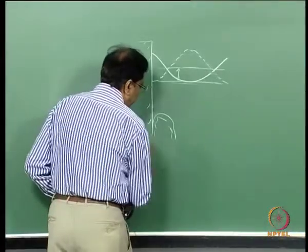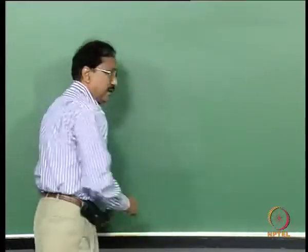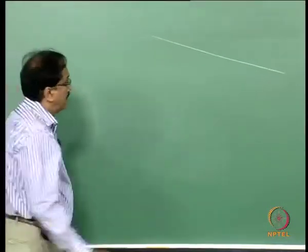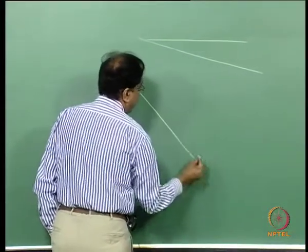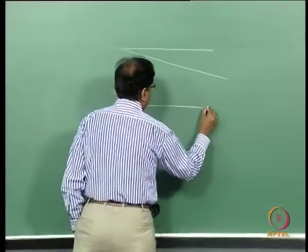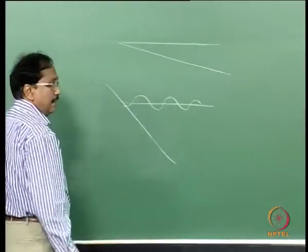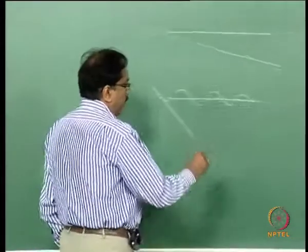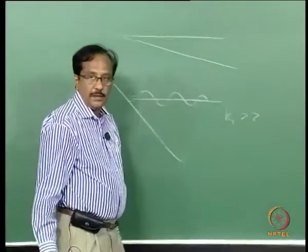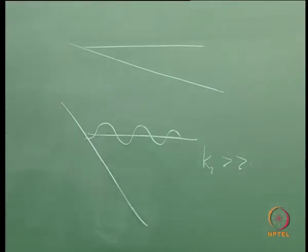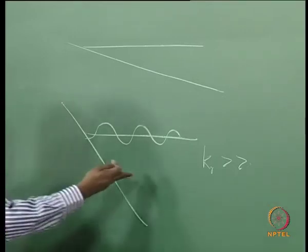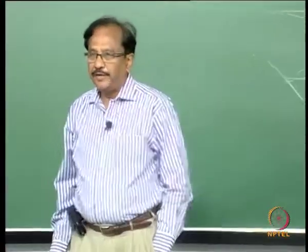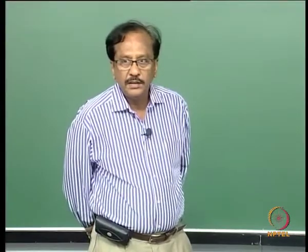It is extremely important to take care of reflection. How does reflection differ for a flat versus steep slope? For a vertical wall, the reflection coefficient is 1, so a steep slope gives higher reflection. For a very flat beach, what happens? Less reflection.